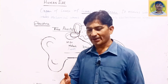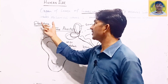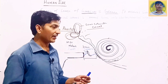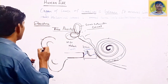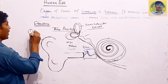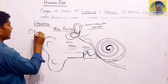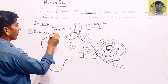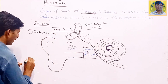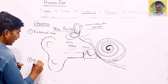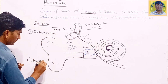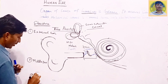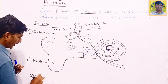The human ear is divided into three parts. Number one is called the external ear, the second part is called the middle ear, and the third part is called the inner ear.